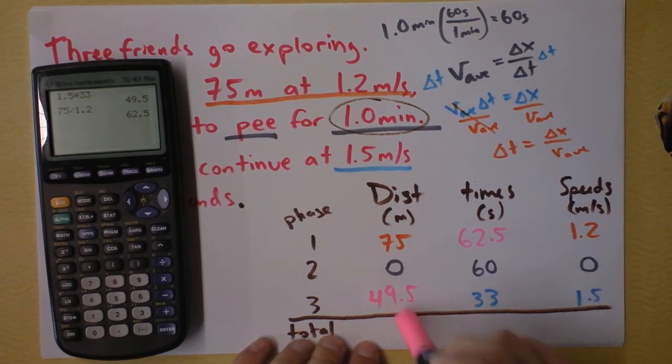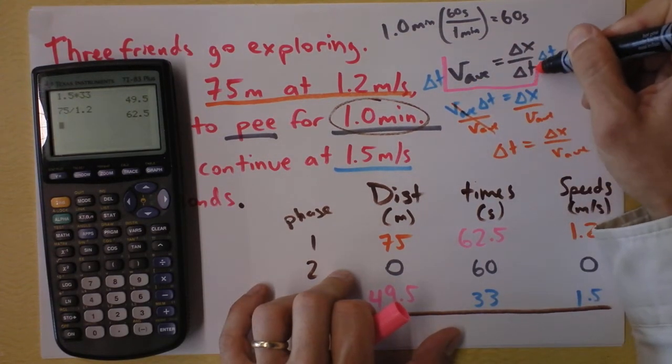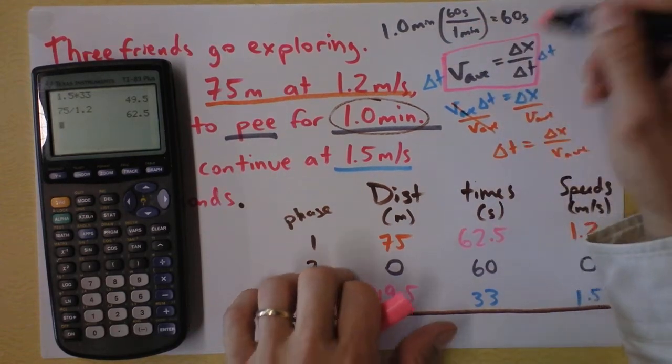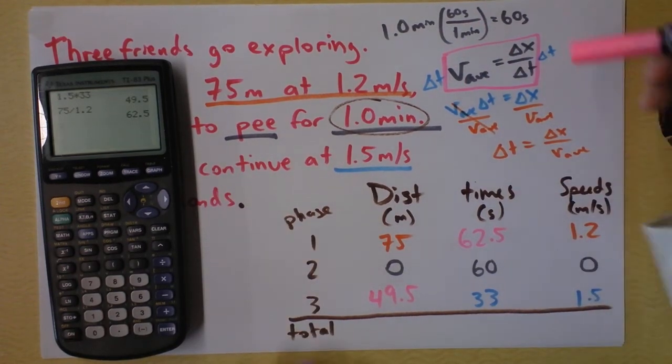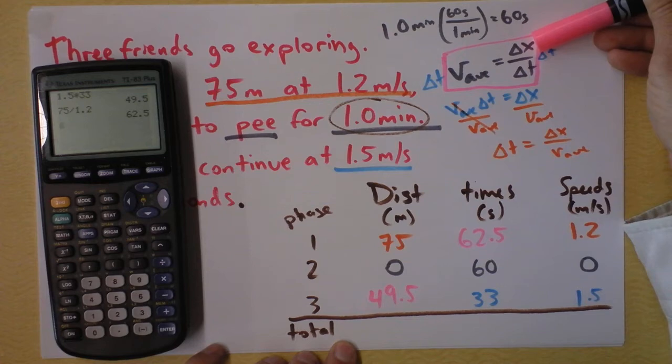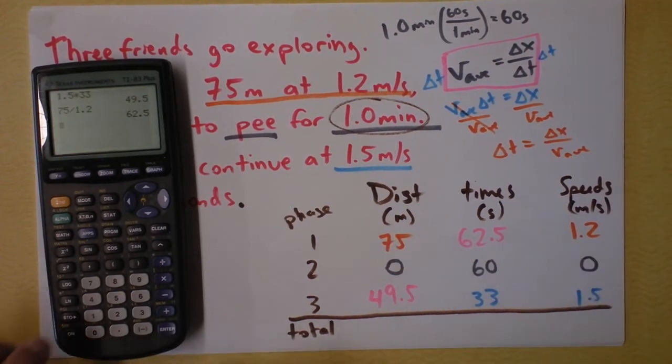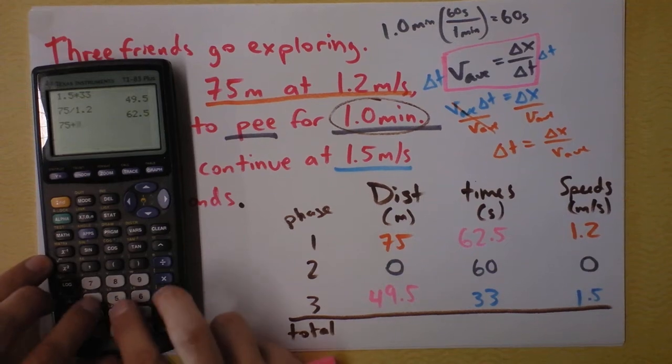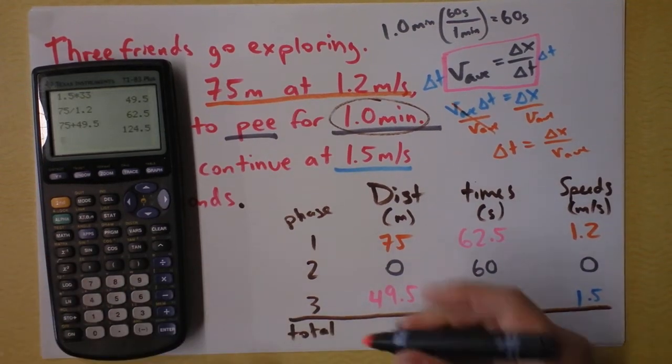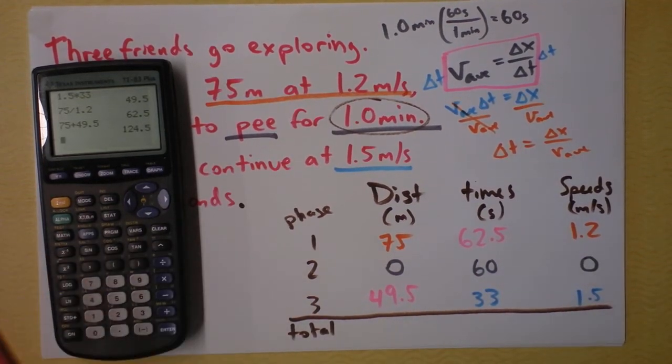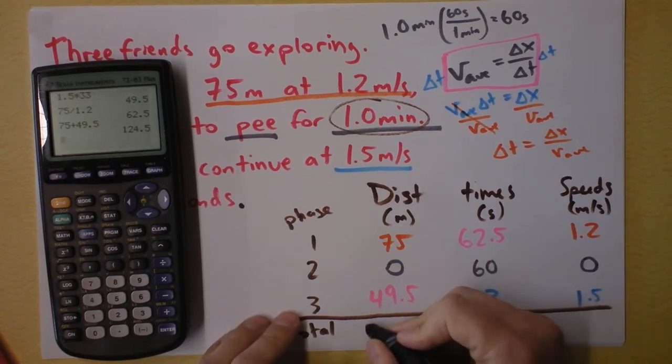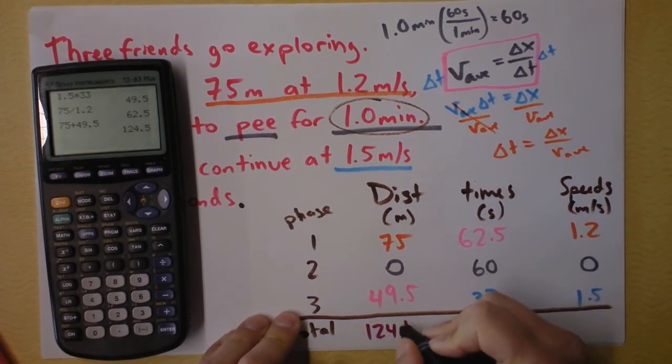So I'm interested in using this initial equation here. We said v average is Δx over Δt. But if I want to know the average speed for the whole trip, I need the entire distance traveled and the entire time it took. To do that, I'll add up the distances, 75 plus 49.5, and that gives me, wait a second, what color should we use here, purple, 124.5 meters.